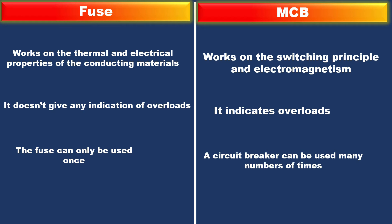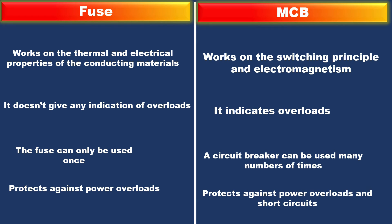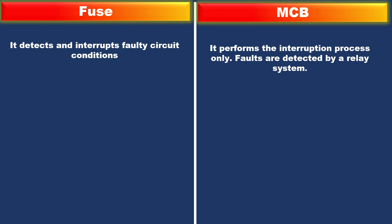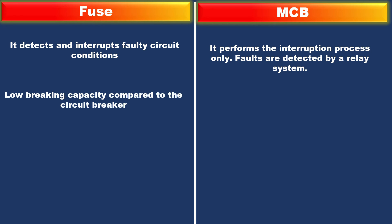A fuse protects against power overload, while an MCB protects against both power overloads and short circuits. A fuse detects and interrupts a faulty circuit condition directly, whereas an MCB performs the interruption process only when a fault is detected by a relay system. Additionally, a fuse has a low breaking capacity compared to a circuit breaker.